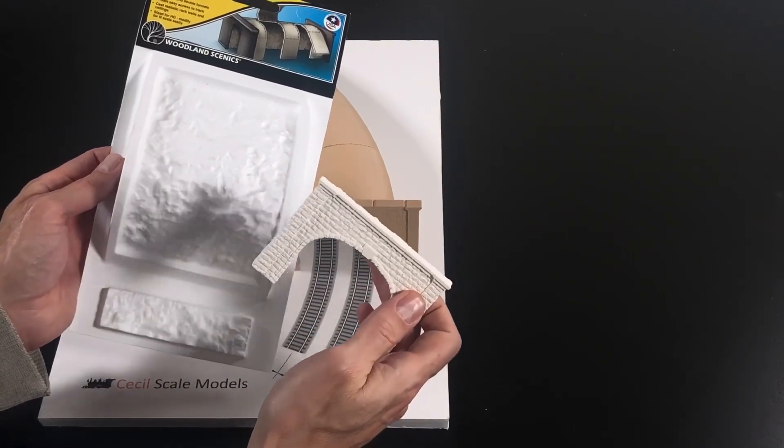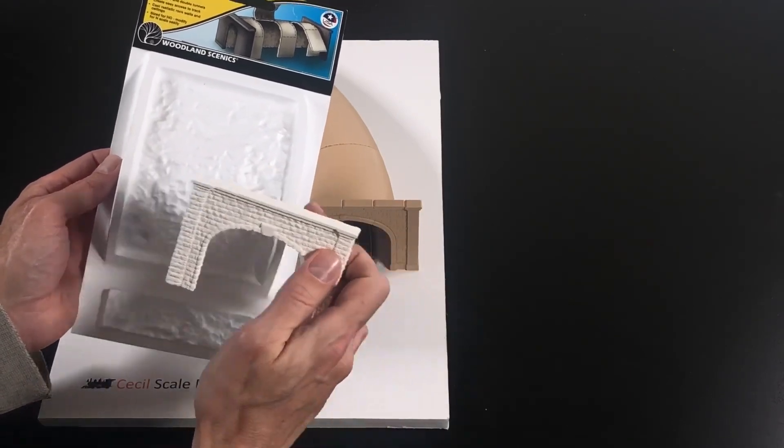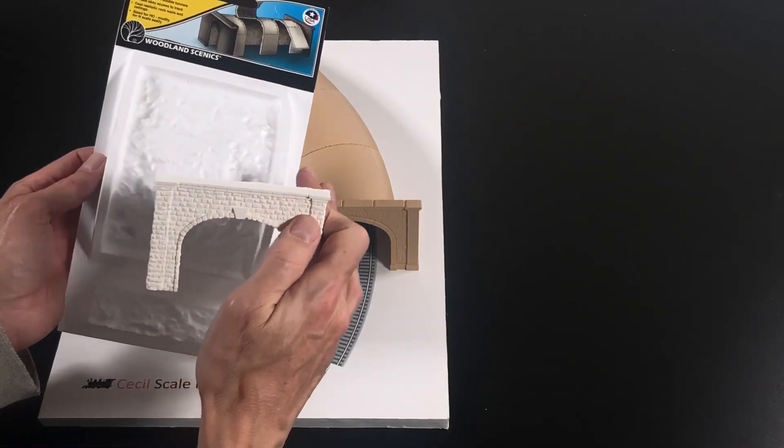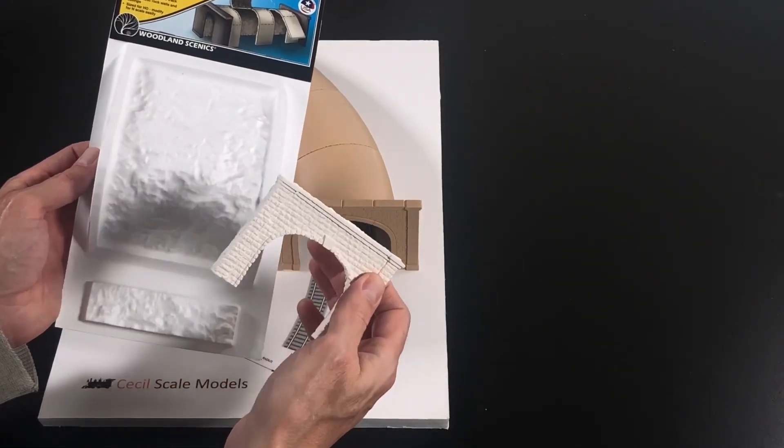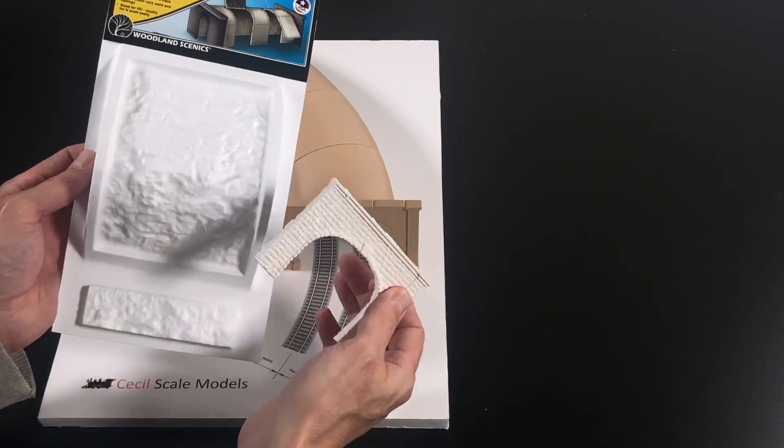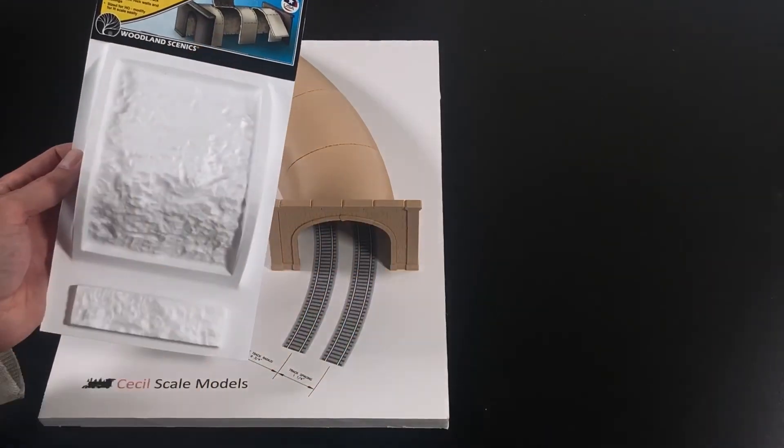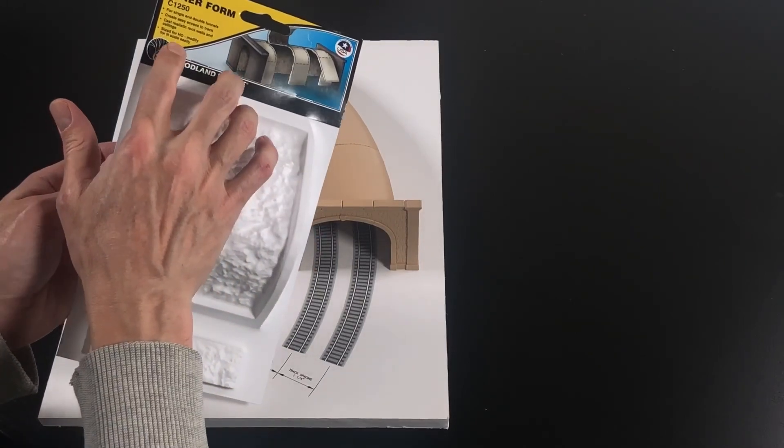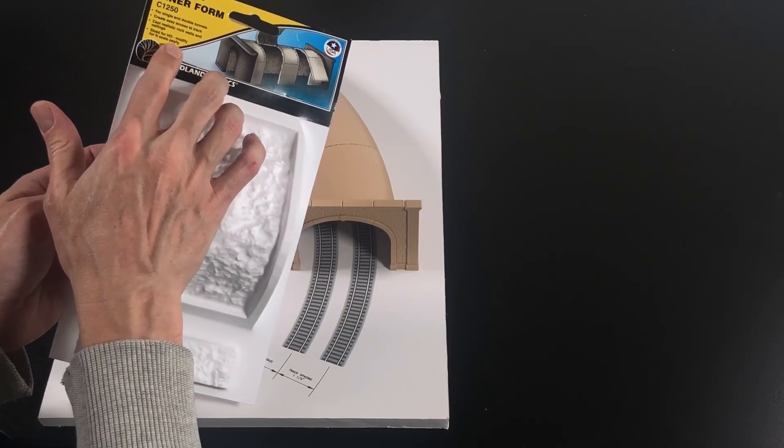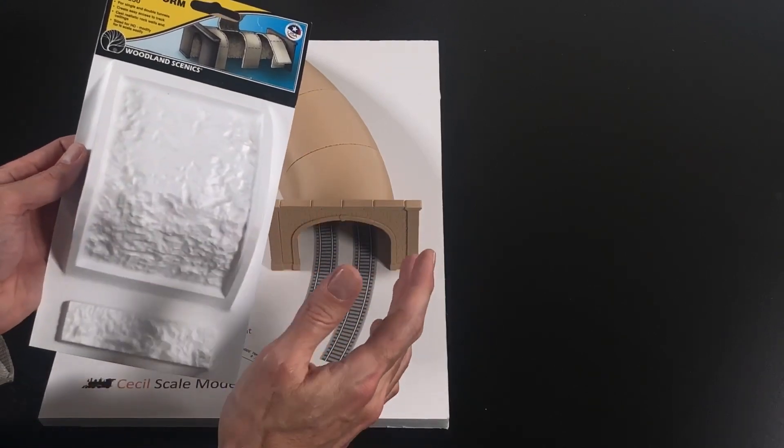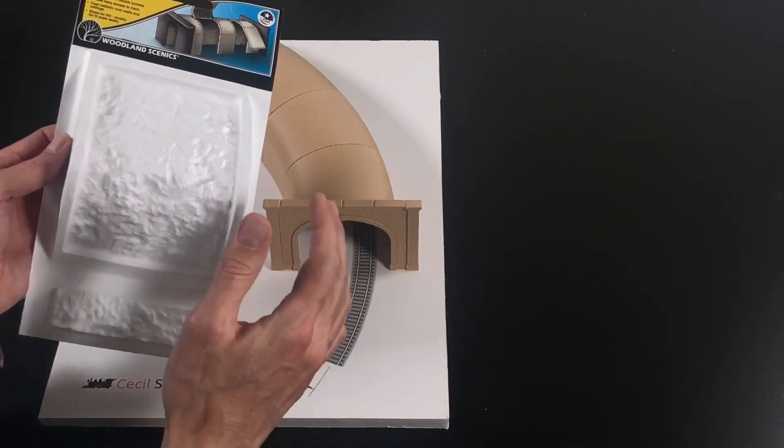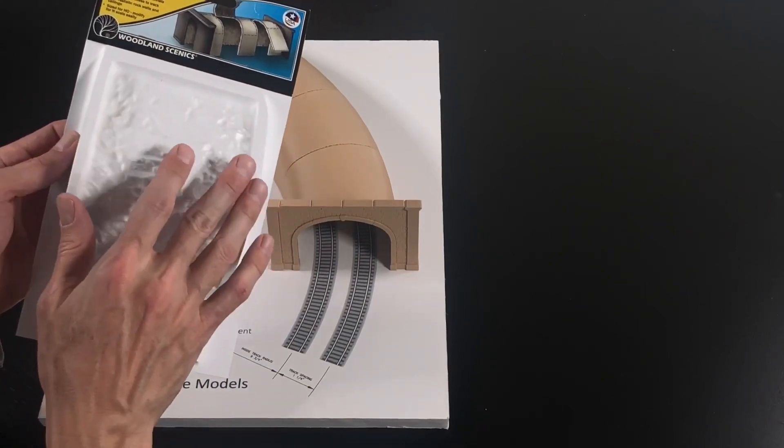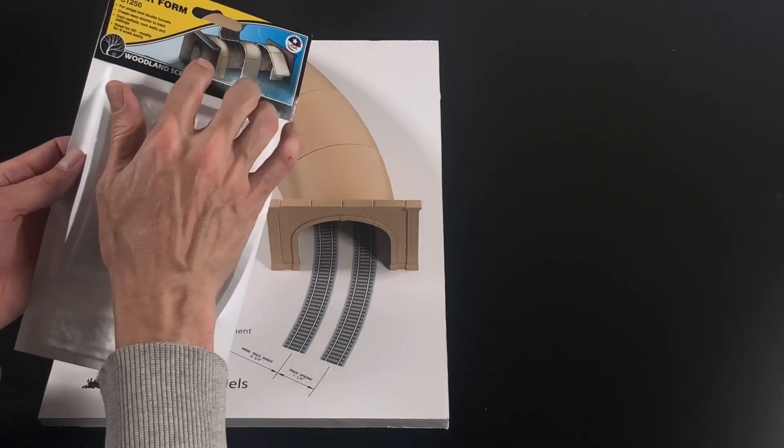Now I want to preface by saying I don't want to poo poo on anyone's products. I happen to think that the Woodland Scenics scenery products are amazing. I love using them. It just turned out that the plaster tunnel portal and in particular this tunnel liner form were not going to work for me. This says size for HO, modify for N scale easily. I model in N scale and it was not easy. What you're meant to do with this is fill this with plaster and wait for it to dry. You make multiple copies of that.